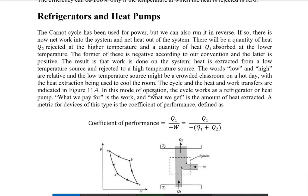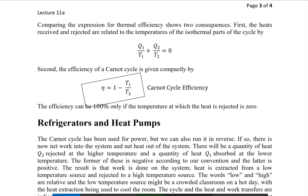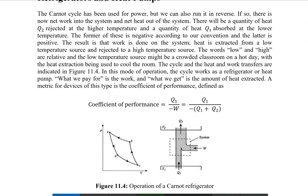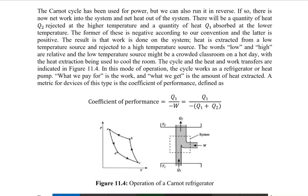Refrigerators and heat pumps work on the reversed Carnot cycle. In a normal Carnot cycle, we extract heat from a high temperature reservoir and reject it to a low temperature reservoir, getting work output. The question is: what if we reverse this cycle — if we supply work to the system, will it extract heat from the low temperature reservoir QL and reject it to a high temperature reservoir QH?